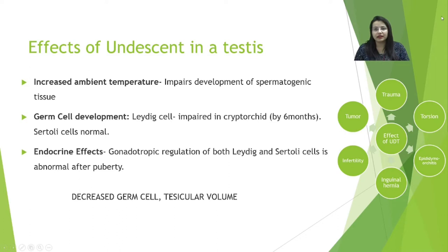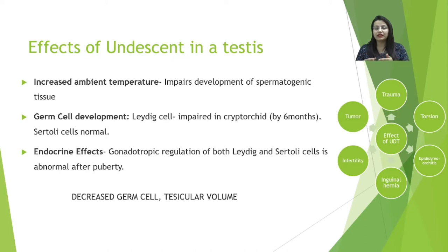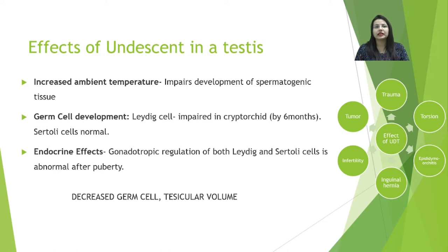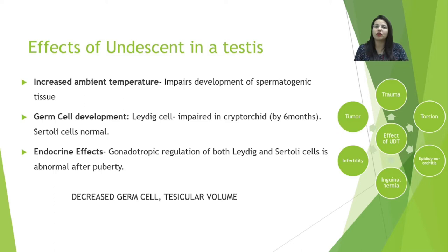The major concern with undescended testis is that for normal development of spermatogenic tissue, a temperature lower than core body temperature is required. If the testis remains intra-abdominal, the higher temperature leads to impaired development of spermatogenic tissue. It has been seen that Leydig cells are the predominant cells affected by this temperature change, while Sertoli cells remain relatively normal. Leydig cells are predominantly responsible for spermatogenic tissue function.